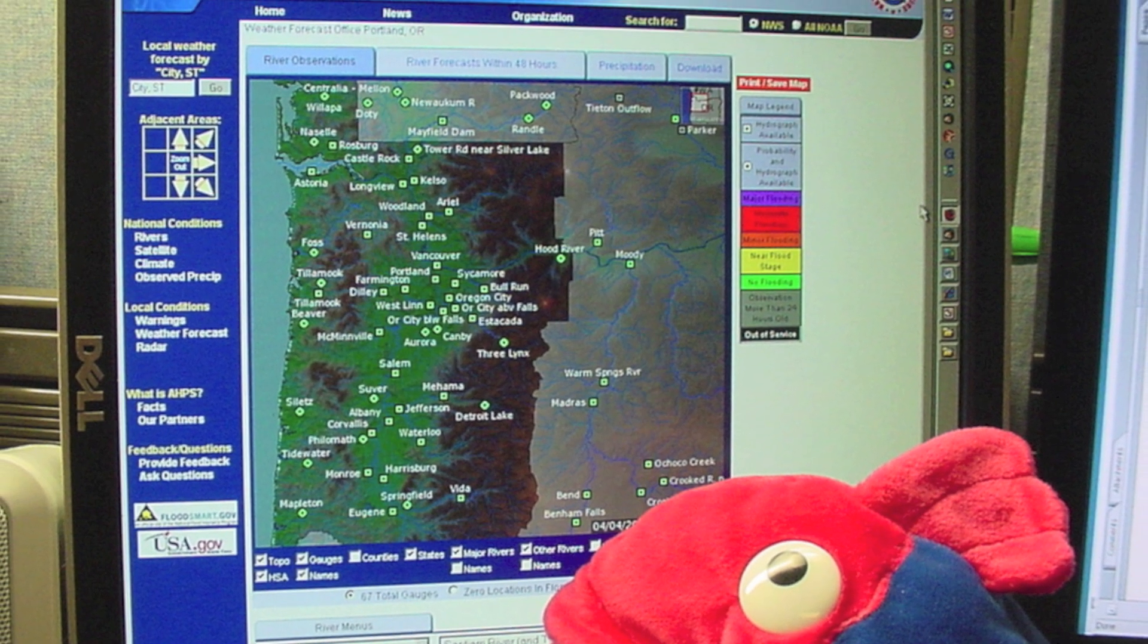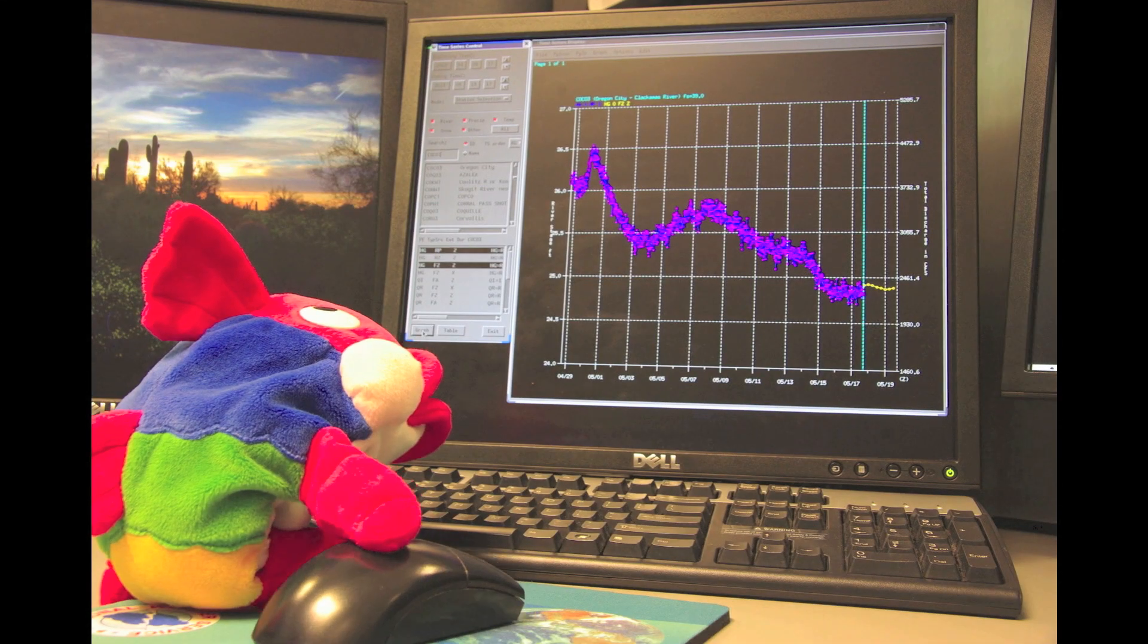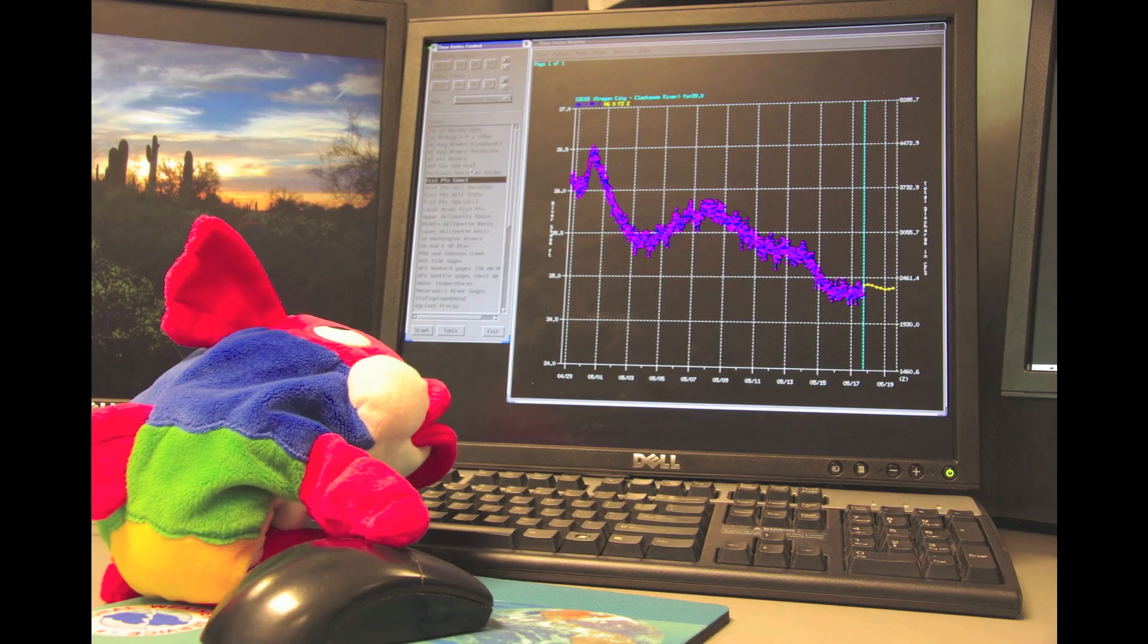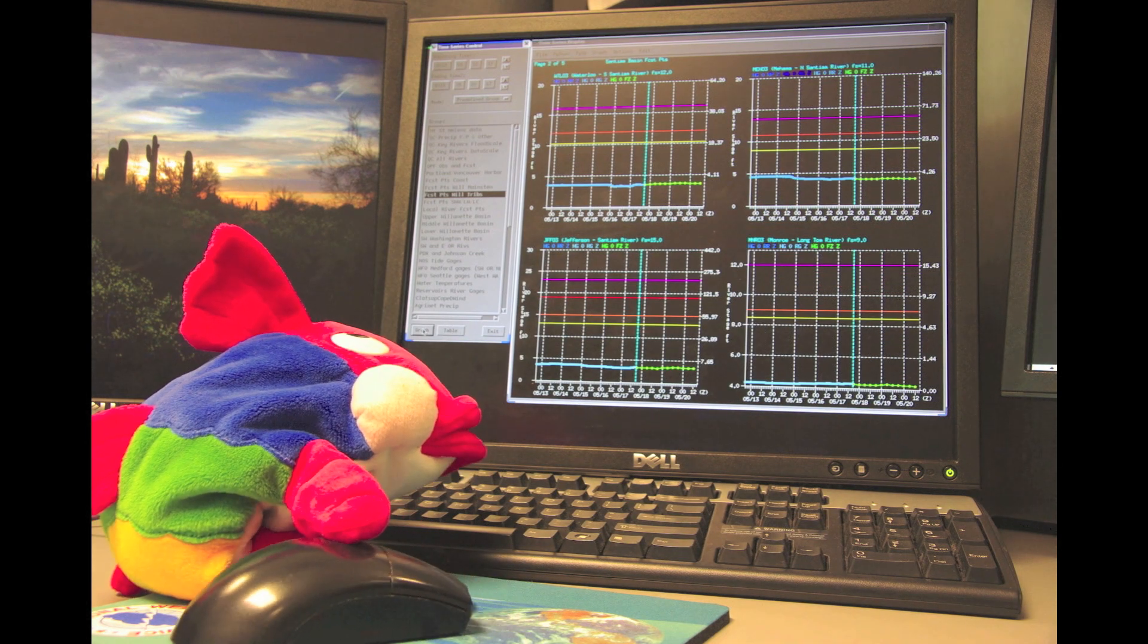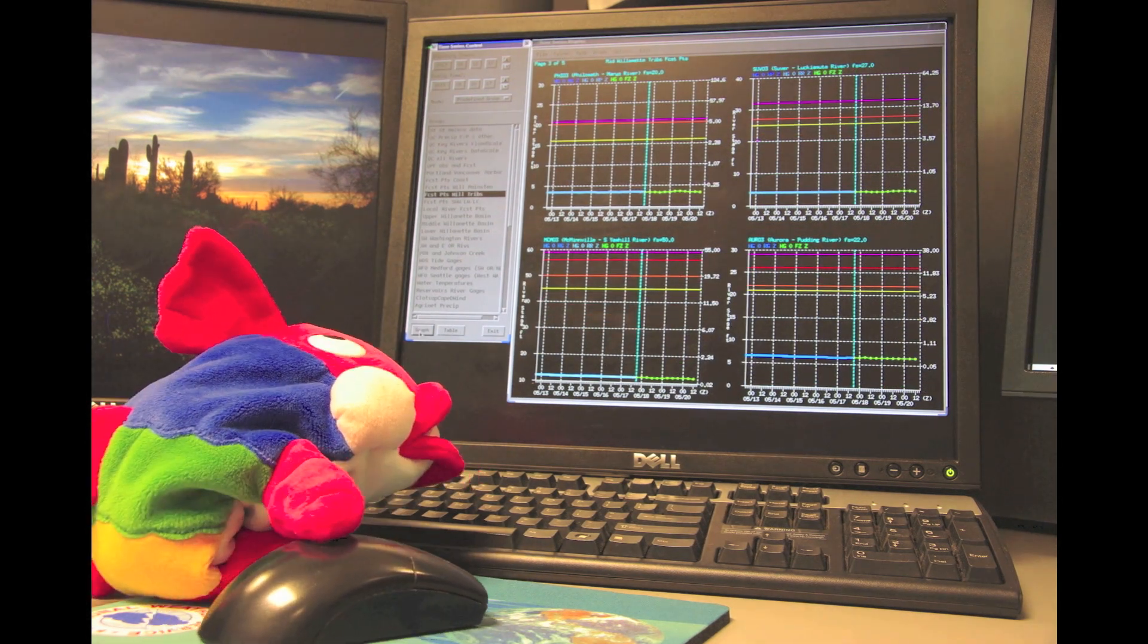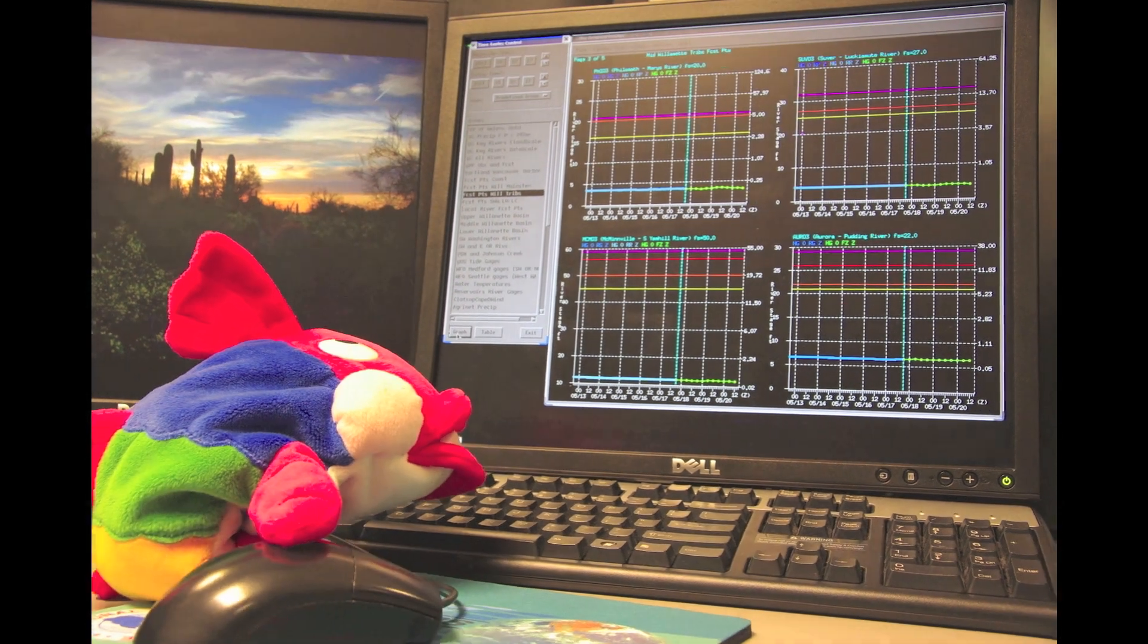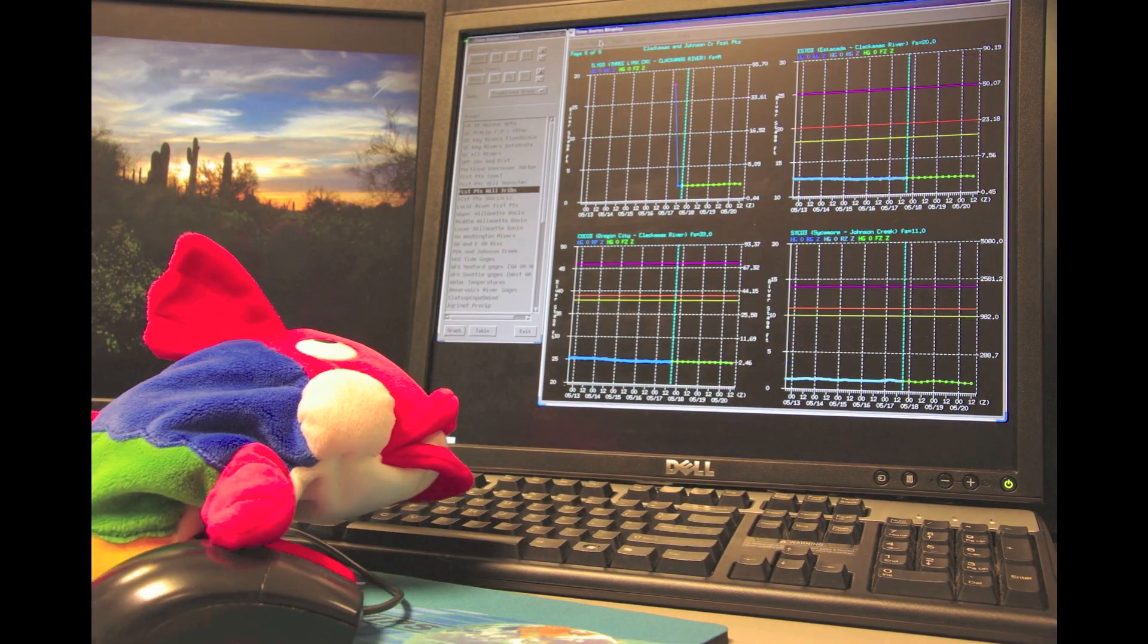Sally keeps track of the local rivers. This is especially important when flooding is possible. Sally looks over the river forecasts that come from the River Forecast Center. She needs to figure out how much water will be in the rivers and how long it will take to move downriver.